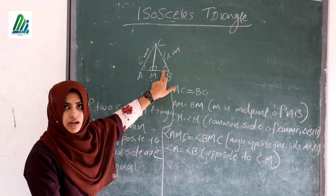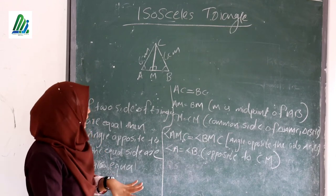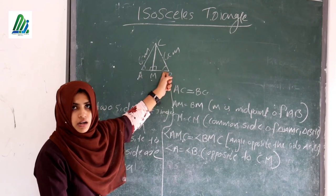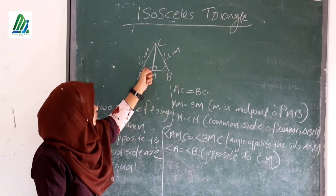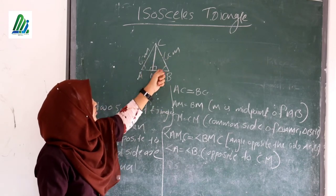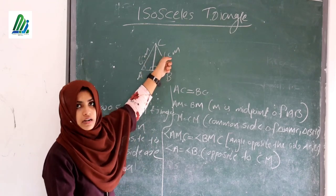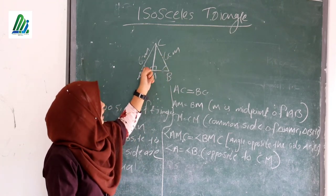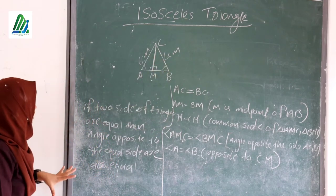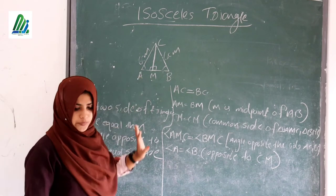If two angles of a triangle are equal, then the sides opposite to the equal angles are equal. Likewise, if two sides of a triangle are equal, then the angles opposite to the two sides are also equal. These are the key properties relating to this figure.